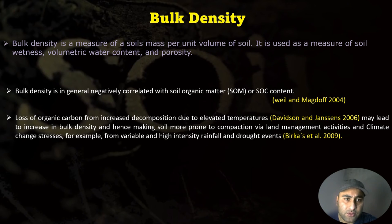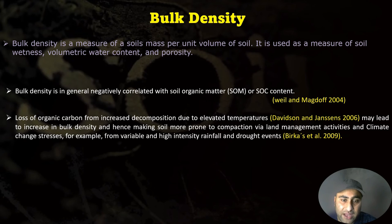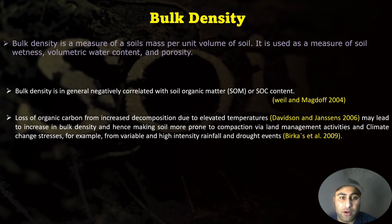Bulk density is a measure of the soil mass per unit volume and is used as a measure of soil compactness, volumetric water content, and porosity. Bulk density has a general negative correlation with soil organic matter: more organic matter means less bulk density, and less organic matter means more bulk density. The loss of organic carbon due to increased decomposition from elevated temperatures may lead to increased bulk density, making the soil more prone to compaction from land management activities and climate stresses such as variable and high rainfall events.